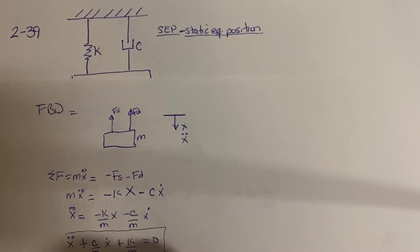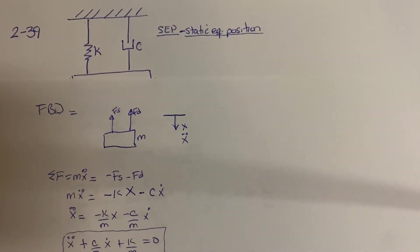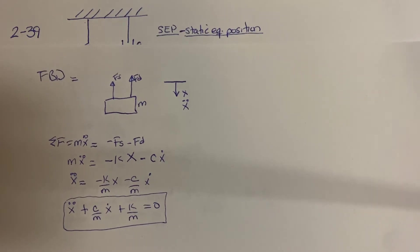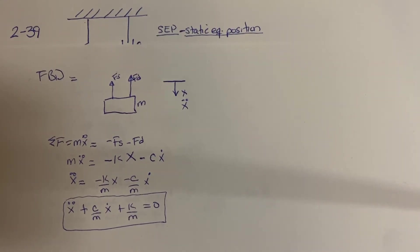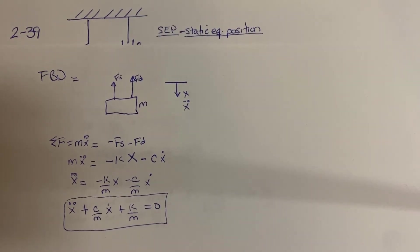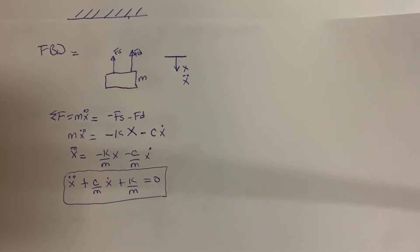This is a free vibrating system — there are no external forces acting on the system. The first step is to find the damping ratio, and we can easily find the damping ratio from the equation of motion by comparing it to the characteristic equation of a free vibrating system with damping.